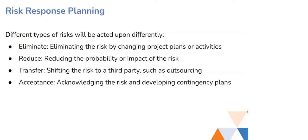The second approach is reducing — reducing the probability or impact. For example, if a resource is going on leave, you can have another resource come in. You pass knowledge transfer to both members at the start, so when the main resource is not present, the other can chip in. The second resource won't have as much confidence since they haven't worked entirely on it, so the pace will be a bit less — that's why it's reduced and not directly eliminated.